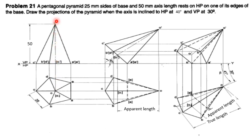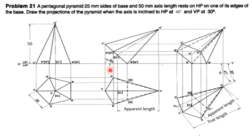From the apex point, draw a vertical projector, then draw the axis height of 50 mm and name it O-dash and O1-dash. Draw vertical projectors from all corners, draw the base, and connect the corners to the apex point and make them dark. Since the axis is inclined to HP at 40 degrees, the base is perpendicular to the axis, so the base must be drawn at 50 degree inclination.